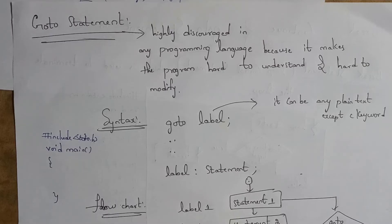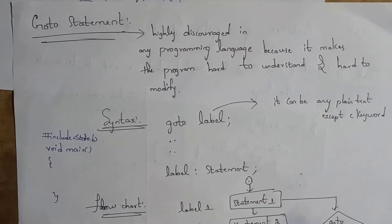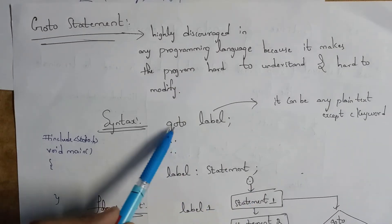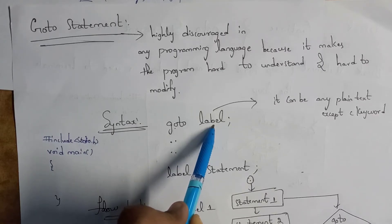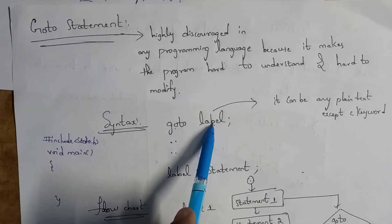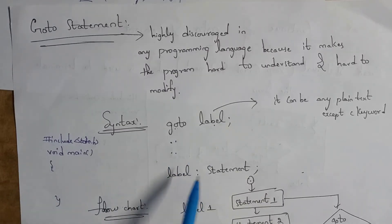If you write any program using the goto statement, that program is very hard to understand and modification is very hard. So any programming language does not recommend the goto statement. The syntax of goto is: first write 'goto' followed by a label name. A label is just any text or name — it should not contain any keywords. You write 'goto label' and that label contains some statement.